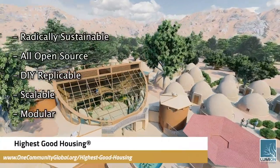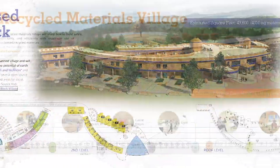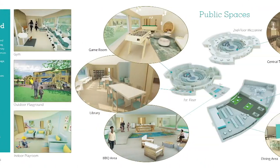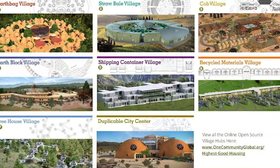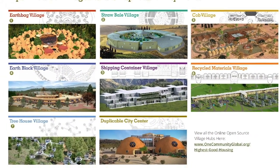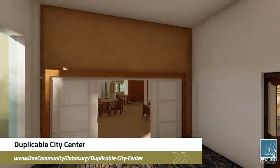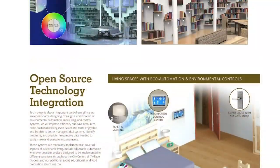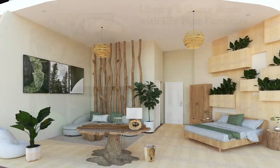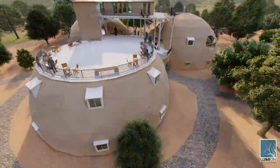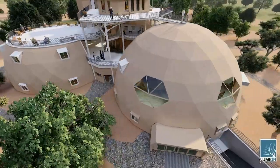The One Community approach to highest good housing is eco-artistic home building that is affordable, sustainable, do-it-yourself duplicable, resource and space efficient, and consists of seven different sustainably constructed village models. One Community is also creating an open source duplicable city center designed to be LEED Platinum certified, provide 12 guest rooms, dining for over 150 people, and laundry and recreation space for over 300 people, all while saving money, time, space, and resources.